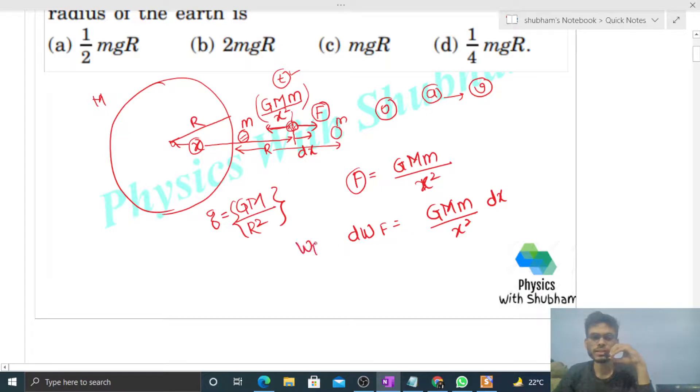Now work done by this external force is the integration of this. You have to take the integration where x is varying from r to 2r. Initial position x is equal to r from the center of earth and finally x is equal to 2r. So just take the integration, capital G M small m is constant, integration of 1 by x square dx from r to 2r. It will be minus 1 by x, just put the limits 2r and r, so it will be simply 1 by 2r.